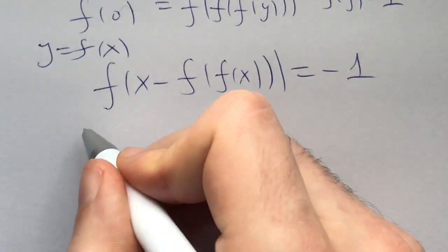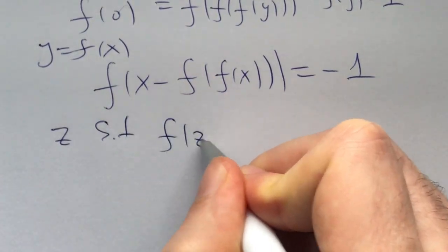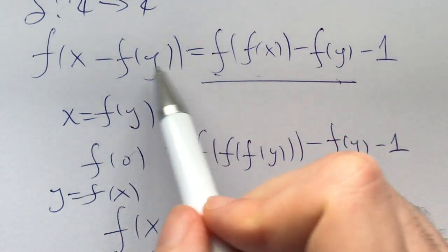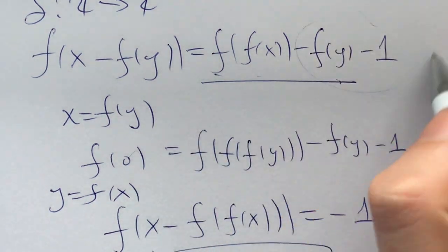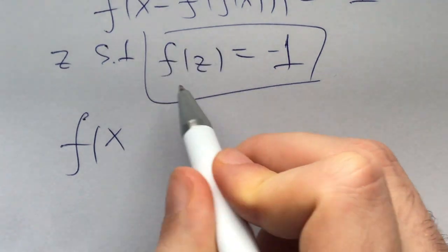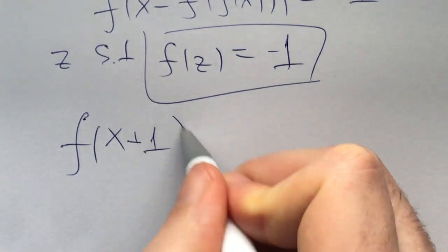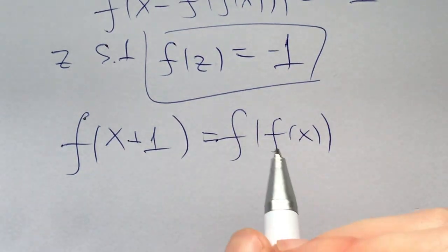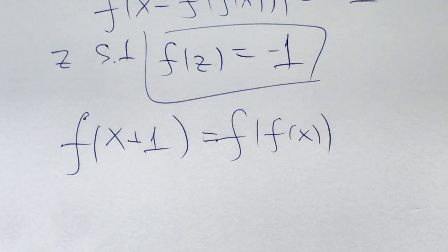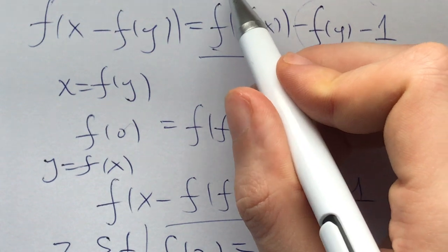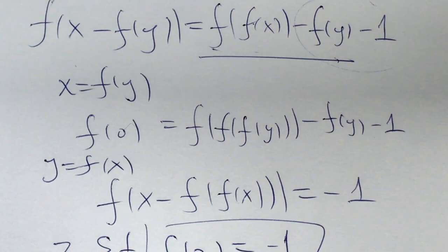This is fantastic because now we know for sure that negative 1 is one of the values that f takes. So there is a value z such that f of z is equal to negative 1. Plugging that z back into the original as y, we get that f of x plus 1 is equal to f of f of x. This simplifies the functional equation — it's generally better to deal with fewer involutions of f.